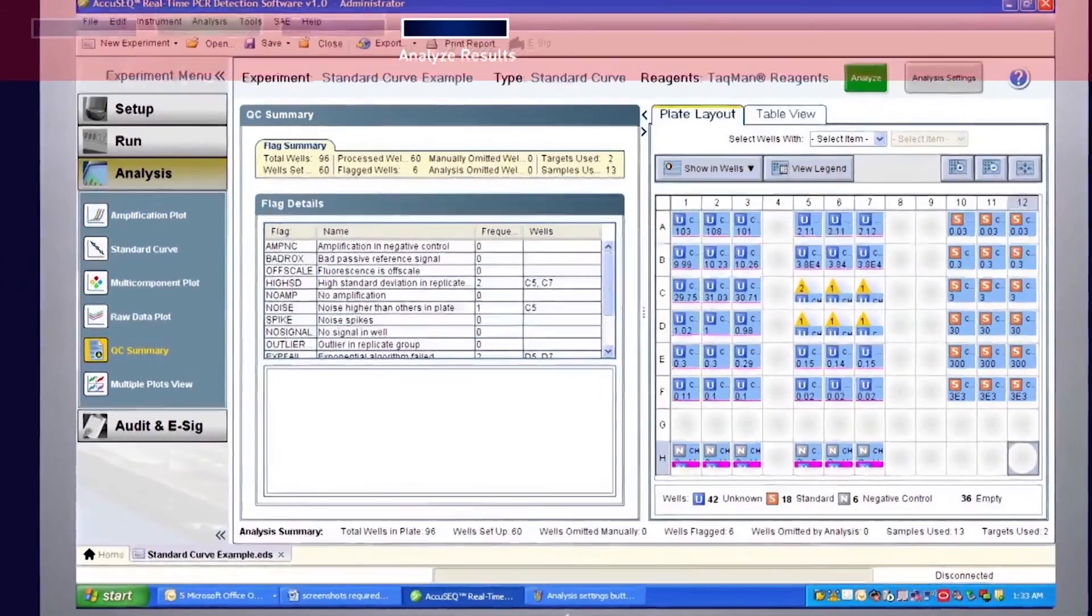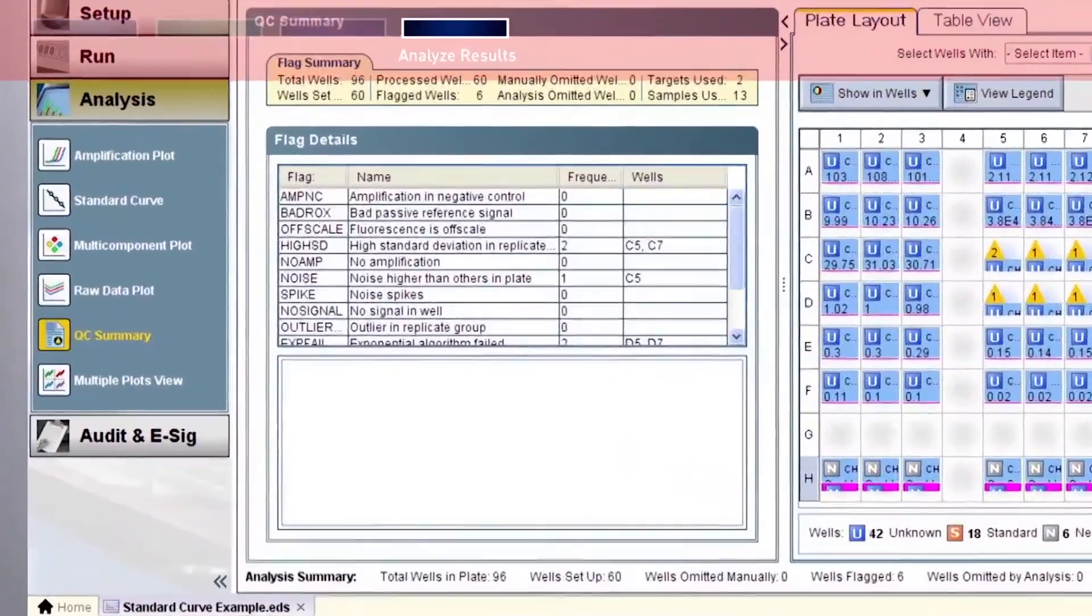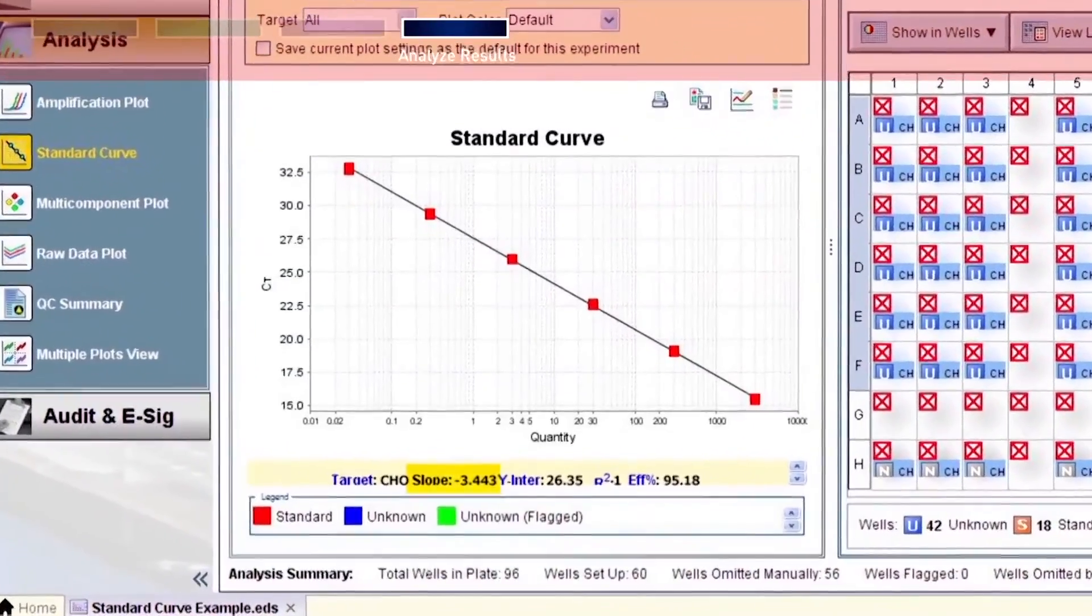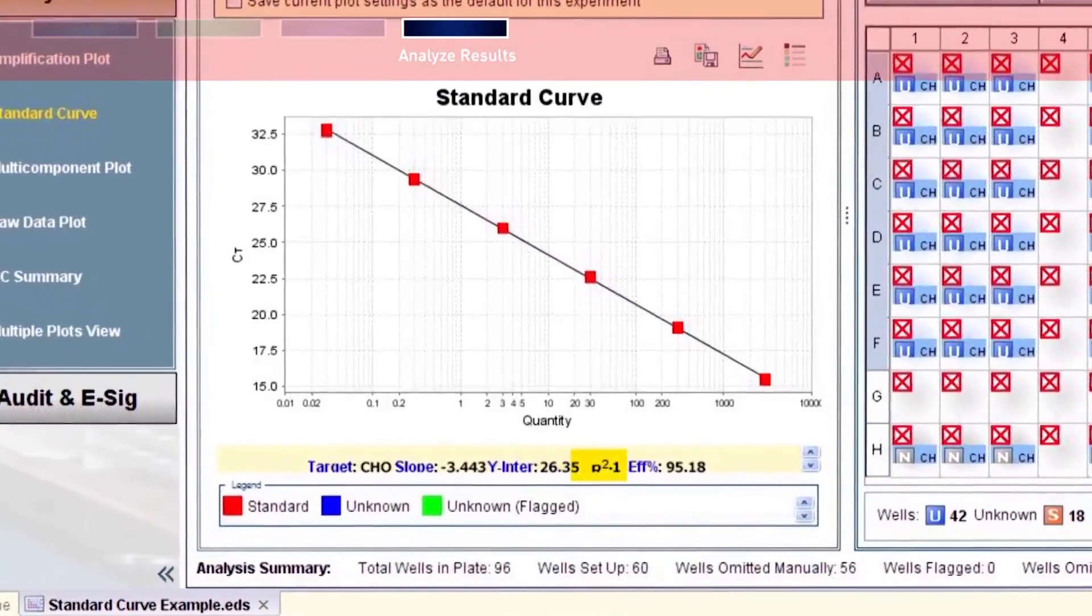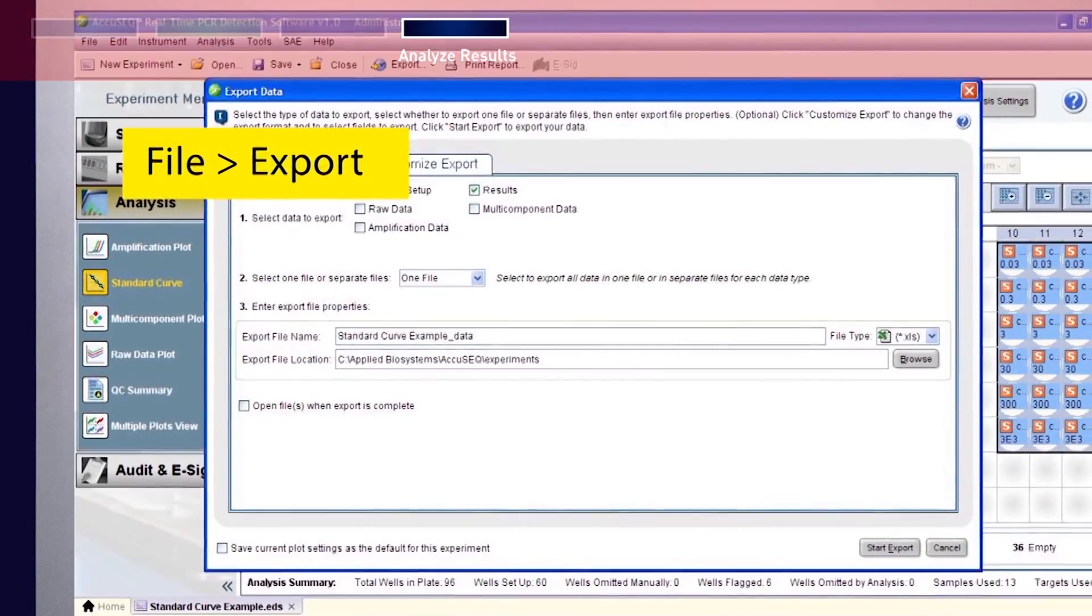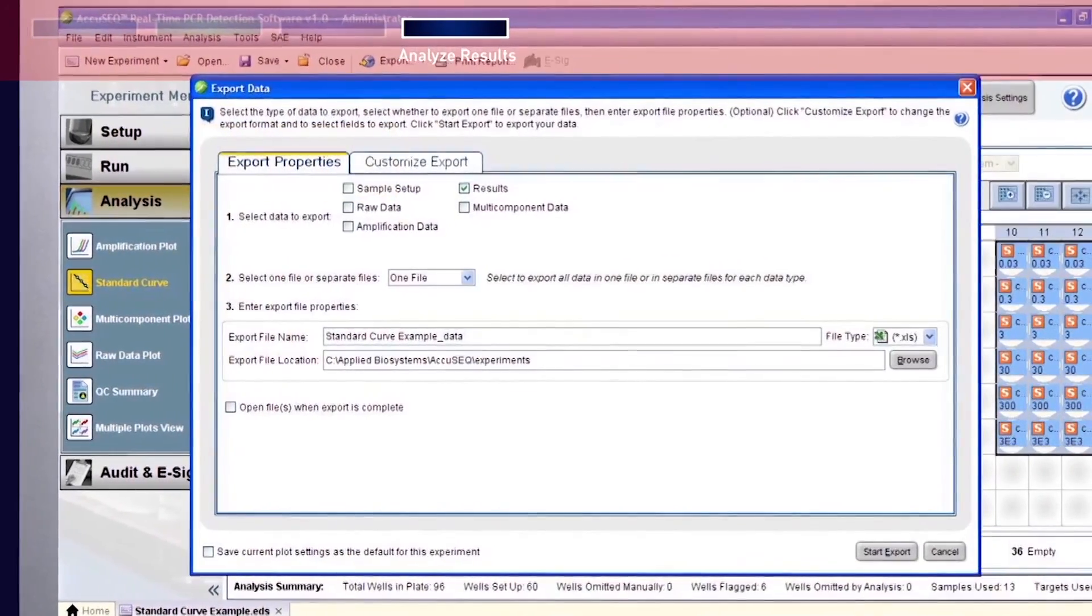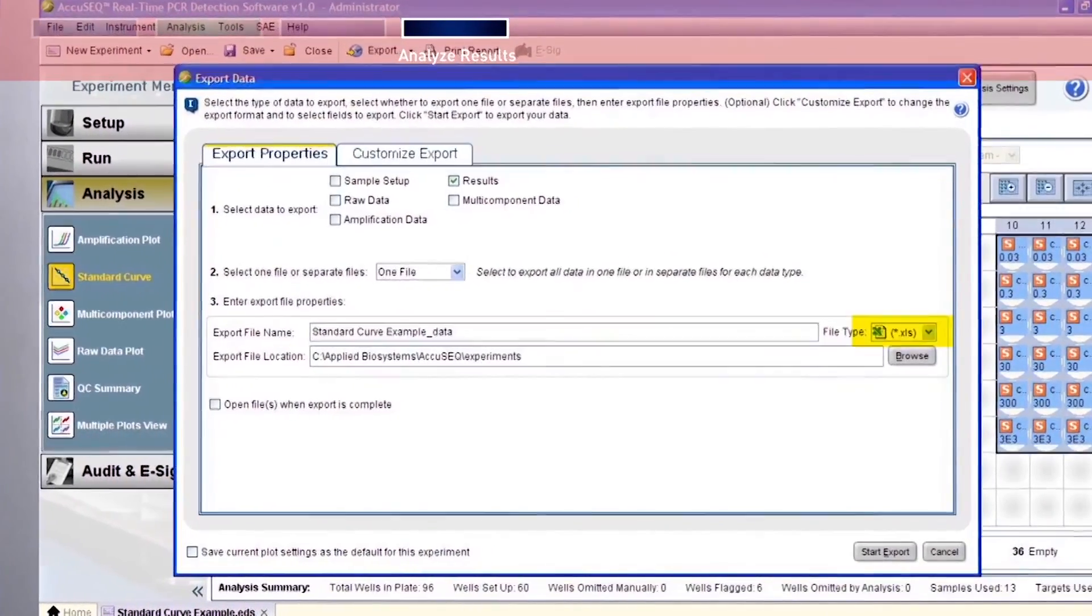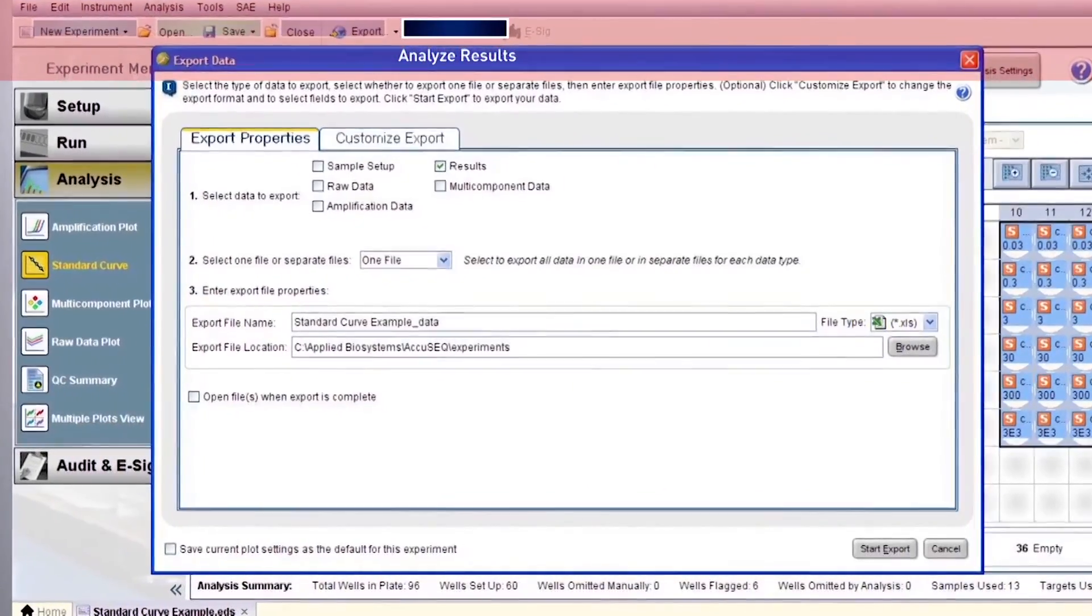Review the data and analyze the flag summary. Verify the values for the slope, intercept, R-squared, and efficiency. To export the database, select File, Export. In the export data menu, select file type XLS. Click Start Export.